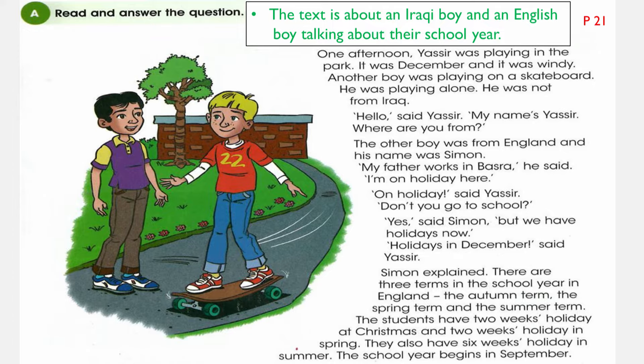He was not from Iraq. 'Hello,' said Yasr. 'My name is Yasr. Where are you from?' Yasr asked the other boy, 'Where are you from?' The other boy was from England. His name was Simon.